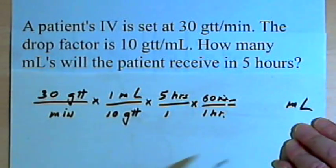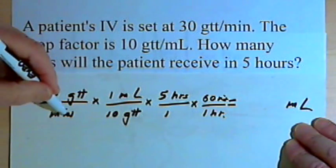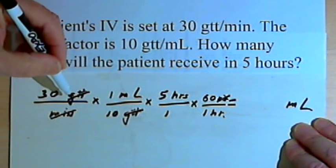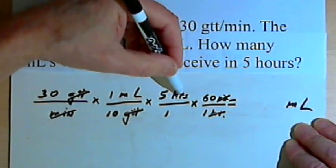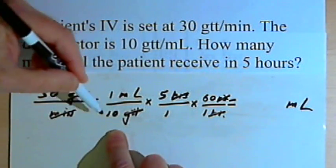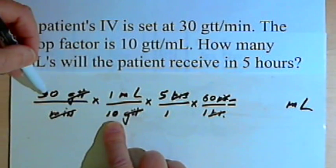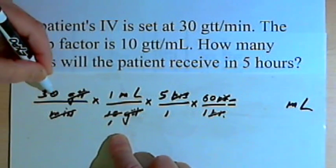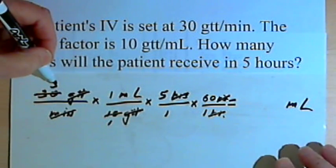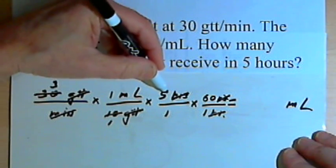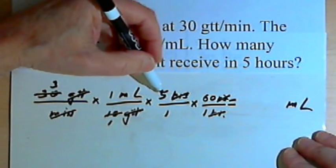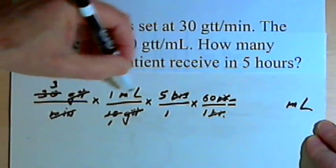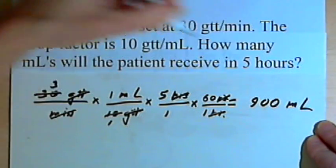Now I should be able to cancel out all of the units except for milliliters. The minutes cancel out, the drops (gtt) cancel out, and the hours cancel out. I've got a 10 in the denominator and a 30 in the numerator — dividing both by 10 gives 1 and 3. Now I've got 3 times milliliters times 5 times 60. Three times 5 is 15, and 15 times 60 is 900. So that's 900 milliliters.